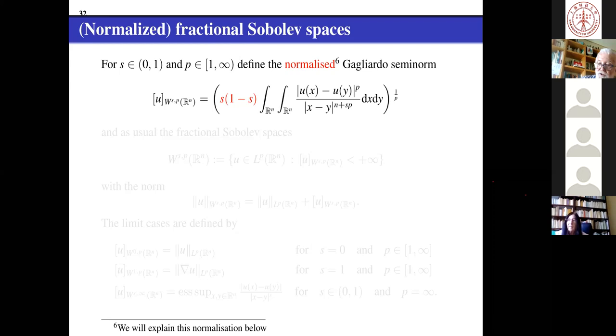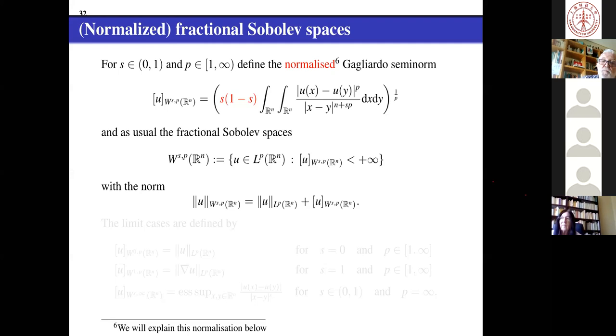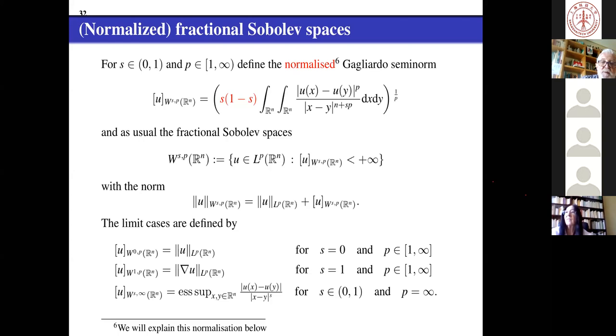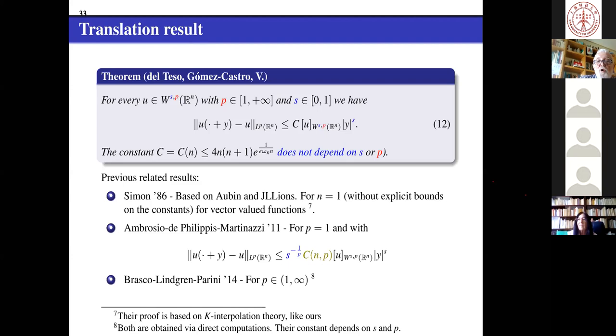In the limit cases remember that you get the real thing. When s is 0 you get the LP, when s is 1 you get the gradient. In order to pass to the limit you need something that people now know, it is this s normalizing of the integrals. But this is well known now, some people in numerical analysis don't know it and this is a pity because everything goes wrong. This is our theorem.